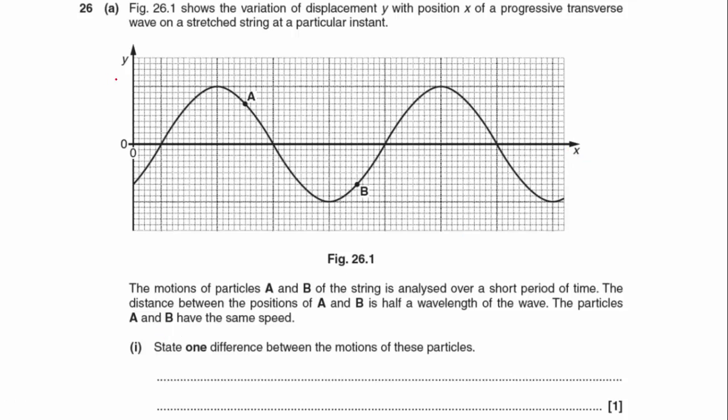Because it's a displacement against position type graph, this is what I tell my students: you've got to think of this one as being a photograph of the wave. So we're seeing all positions but only at one time.